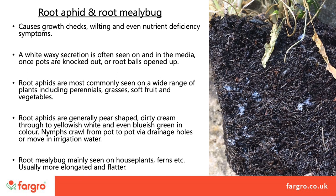Root aphids are generally pear-shaped, dirty cream to yellowish-white in colour, but sometimes even bluish-green. Spread is by nymphs crawling from pot to pot via irrigation holes. They can also move in irrigation water, and winged adults will be produced that will go and lay eggs at stem bases.